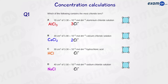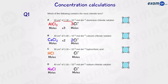We're going to work out the moles of aluminium chloride, then times it by three to get the moles of chloride ions in this solution. For part B, we'll work out the moles of calcium chloride and then times by two to get the moles of chloride ions. For hydrochloric acid, the moles of HCl and Cl⁻ are the same, and also the moles of NaCl and Cl⁻ will be the same because they have a one-to-one ratio. Starting with part A.